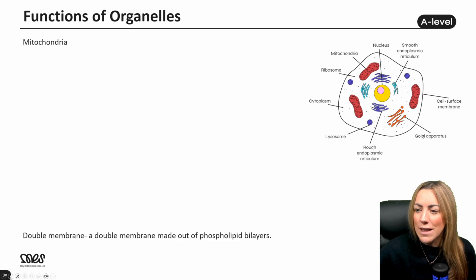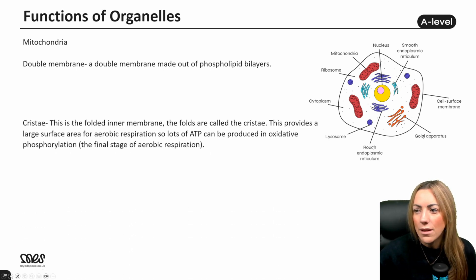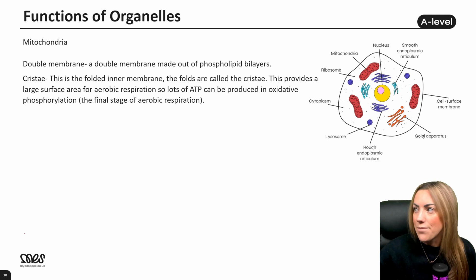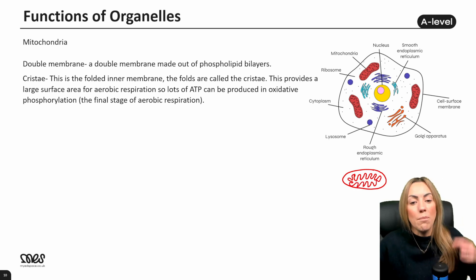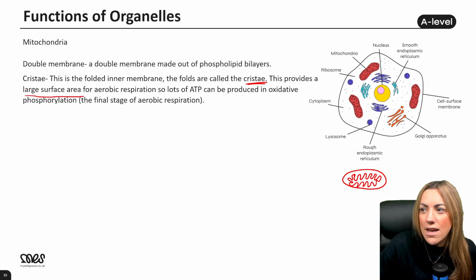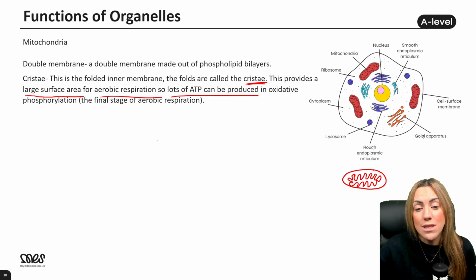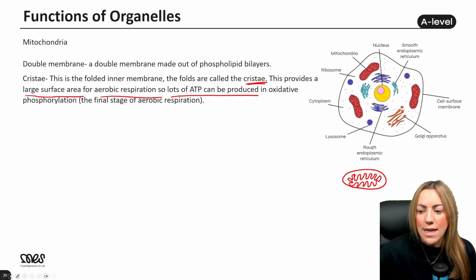The mitochondria have a double membrane — two phospholipid bilayers — like the nucleus and chloroplasts in plant cells. The inner membrane is folded into cristae, giving a very large surface area. This is about providing a large surface area for aerobic respiration, so lots of ATP can be produced. The final stage of respiration that takes place on the cristae is called oxidative phosphorylation. The more highly folded the inner membrane, the more surface area, and the more ATP can be produced.